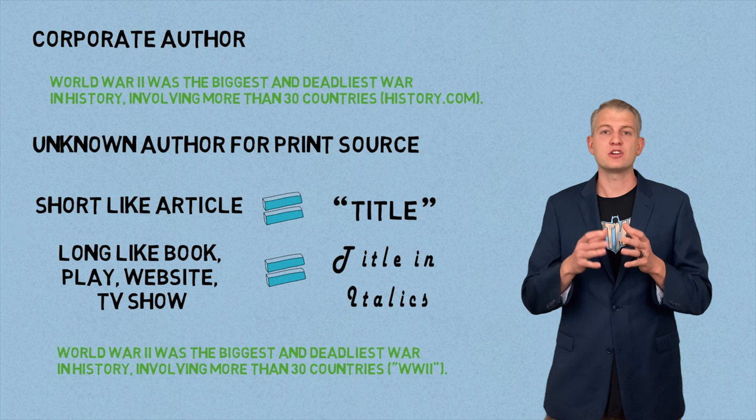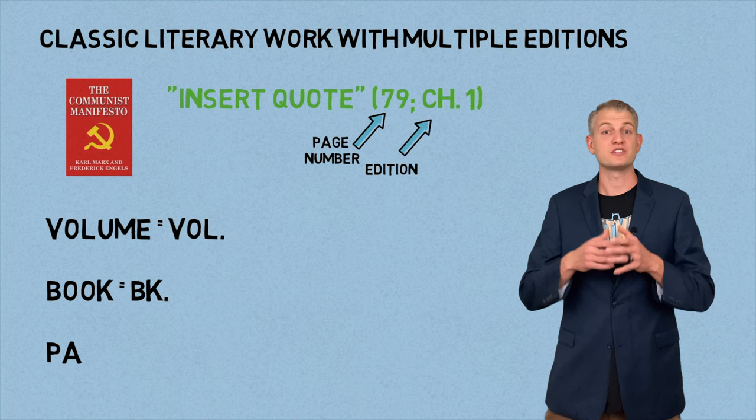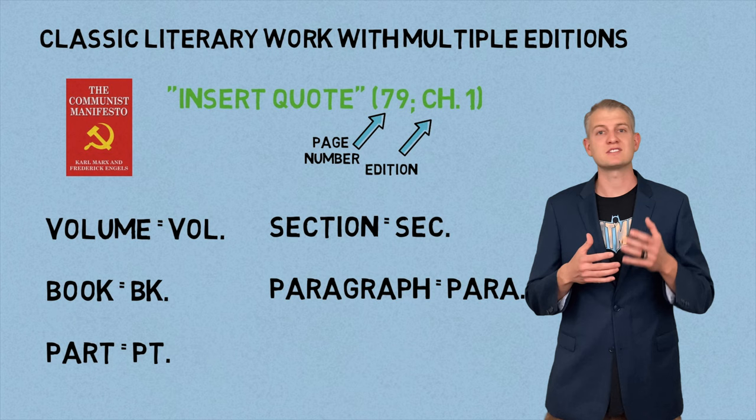Here's what you do when you're citing a classic work with multiple editions. After the quote, in the parentheses have the page number, semicolon, followed by the edition. Whether it's a chapter, volume, book, part, section, or paragraph, use one of these abbreviations in your citation.